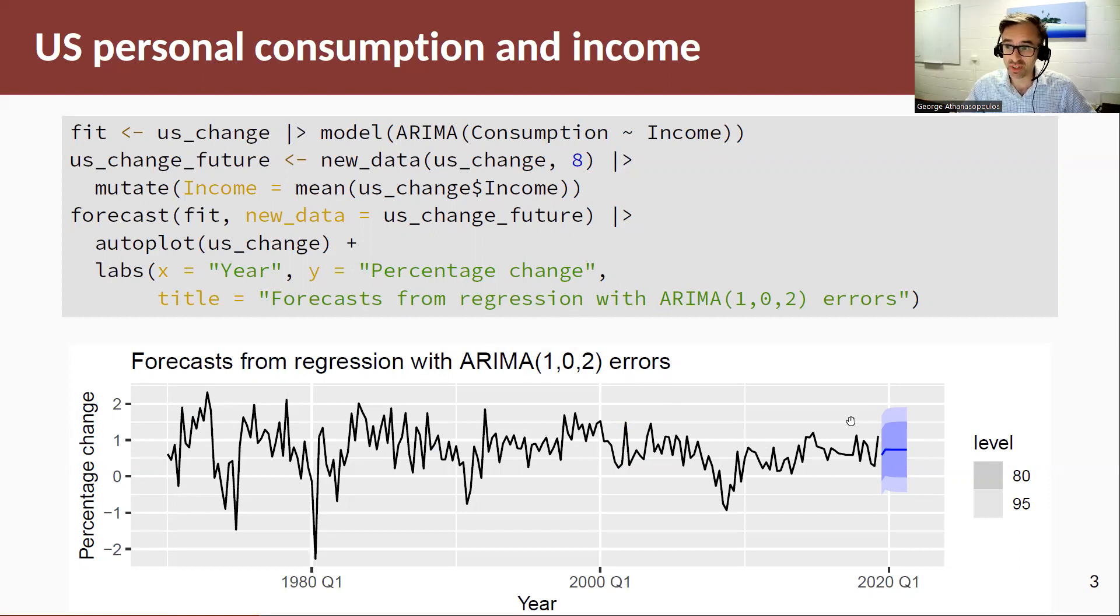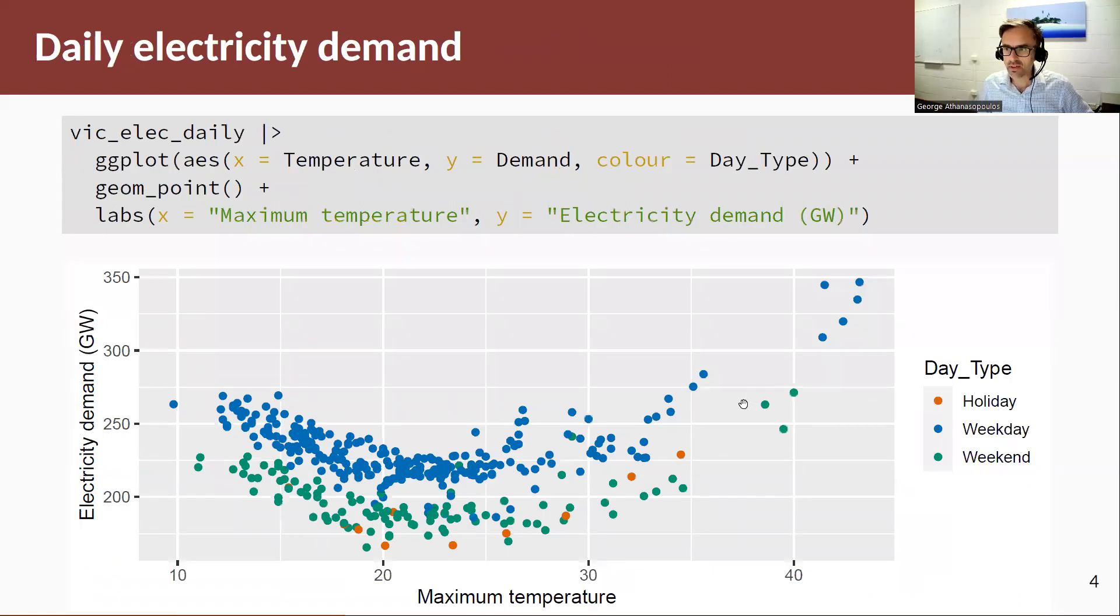Again, remember that these prediction intervals in practice need to probably be wider as they take the values for the income for the future as fixed, as given. Again, let's have a look at another example using daily data. This is a little bit more interesting example. So here we have daily electricity demand in gigawatts for the state of Victoria in Australia.